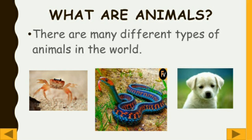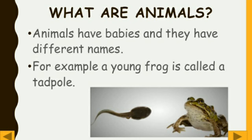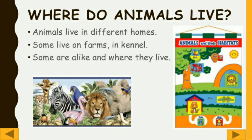Different types of animals include dog, sheep, camel, horse, lion, giraffe, zebra, elephant, snake, and cat. Animals have babies with different names — for example, a young frog is called a tadpole. Animals live in different homes with different names.